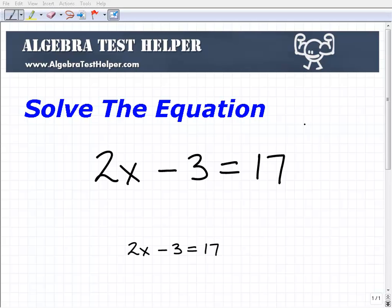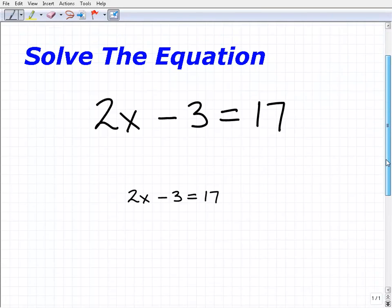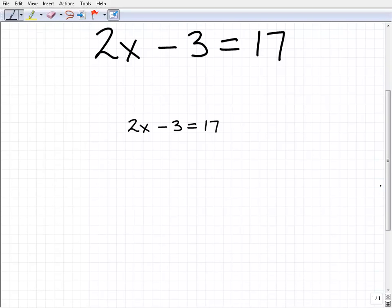Let's go ahead and solve this equation: 2x minus 3 equals 17.